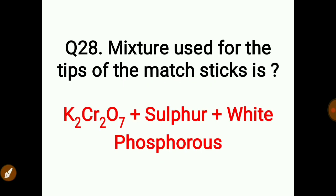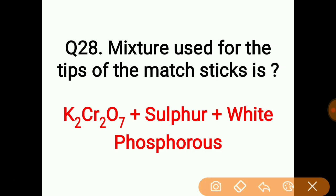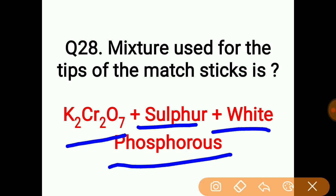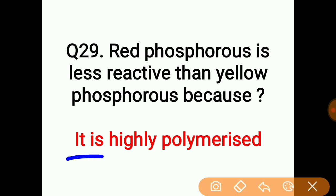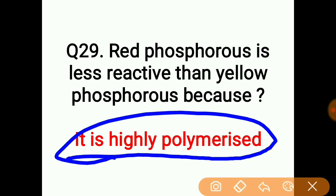The mixture used for the tips of matchsticks is K2Cr2O7, sulfur, and white phosphorus. Red phosphorus is less reactive than yellow phosphorus because it is highly polymerized.